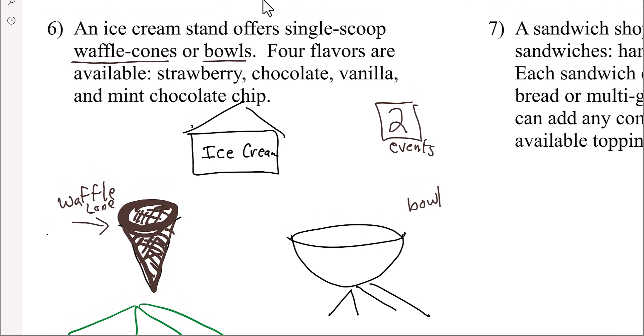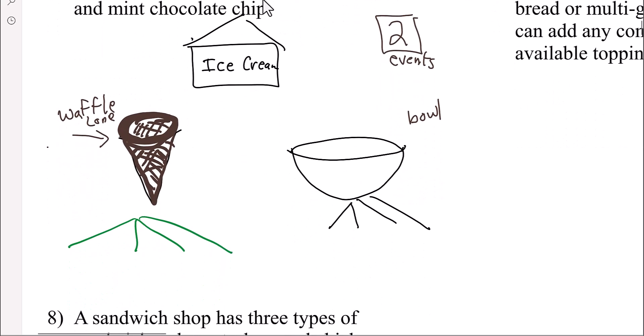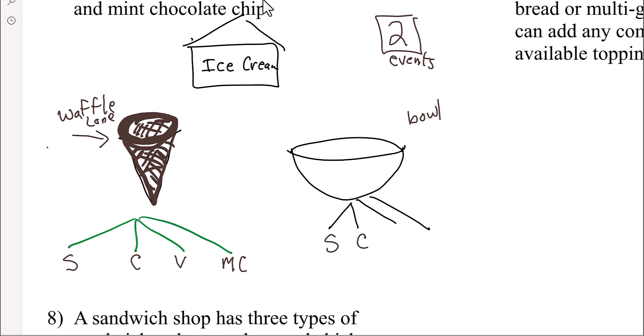And now there are four flavors. So there's strawberry, chocolate, vanilla, or mint chocolate chip. Strawberry in a bowl. Strawberry, chocolate, vanilla, mint chocolate chip. Well, that's 1, 2, 3, 4, 5, 6, 7, 8.